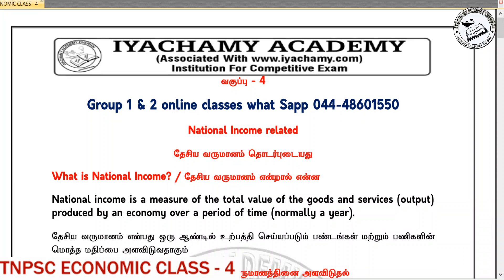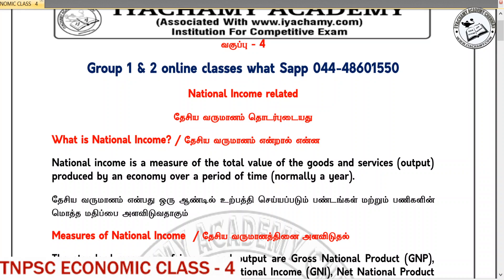One component of national income is goods and services. I am talking about physical products. For example, in India, we are producing a car, we are doing machinery — these are goods. For services, we are talking about parking, doctors, lawyers — these are services.